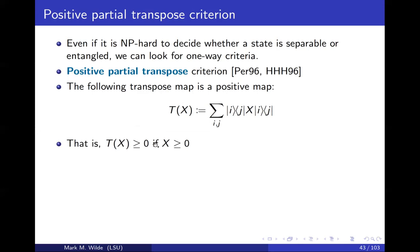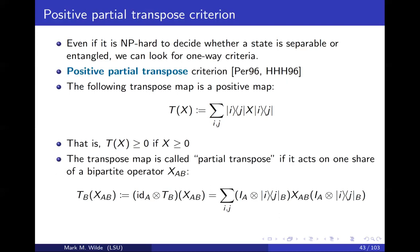The transpose is a positive map. What does that mean? If x is positive semi-definite, then its transpose is positive semi-definite also. However, the transpose is not completely positive. The transpose is called a partial transpose if it acts on one share of a bipartite operator.